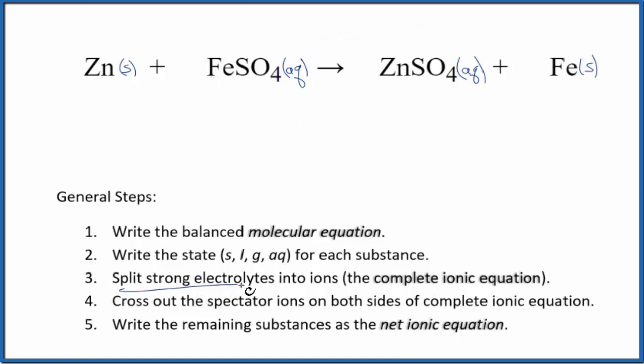We'll next split the strong electrolytes into their ions. That'll give us the complete ionic equation. Zinc, we can't split apart. It's just solid zinc. So we're going to put zinc. I won't write the states now. Let's do that at the end.